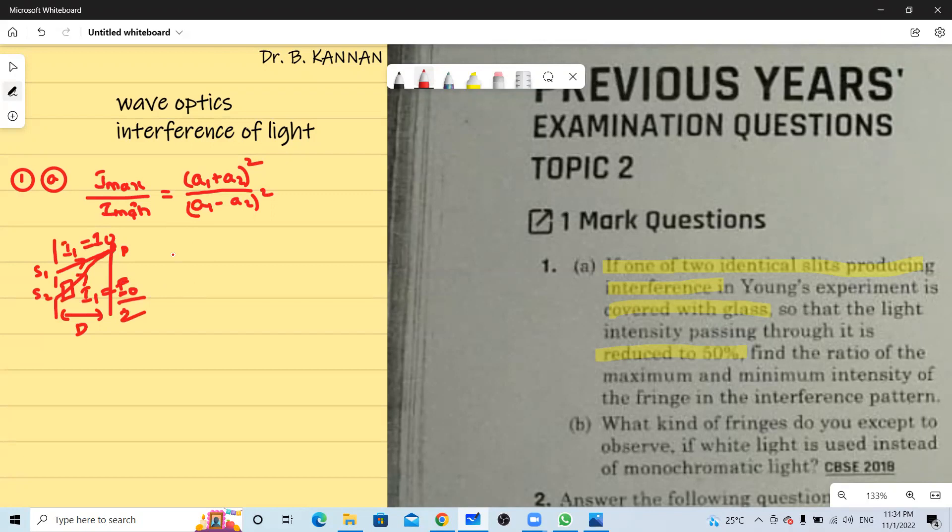And also we know that intensity is directly proportional to amplitude square. So I1 is proportional to A1 square and A1 is proportional to root I1. So wherever I have A1 I can put root I1.